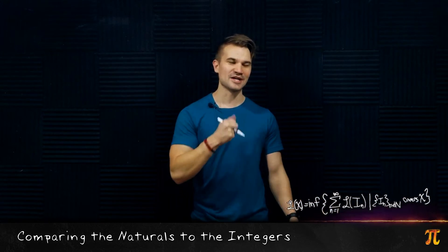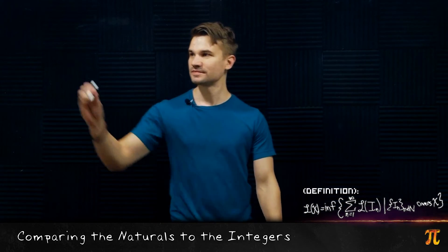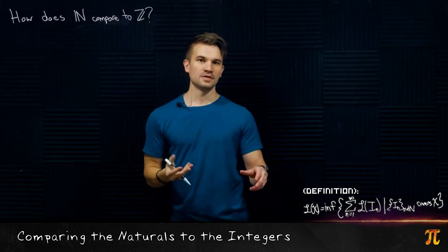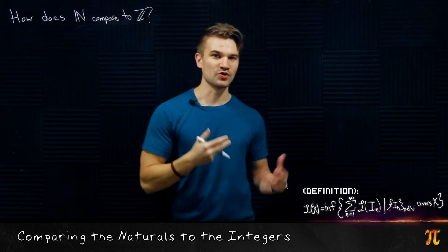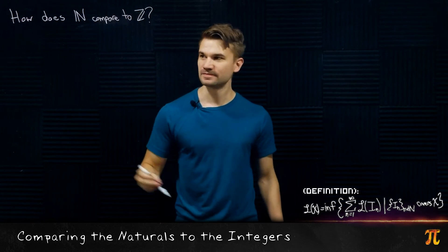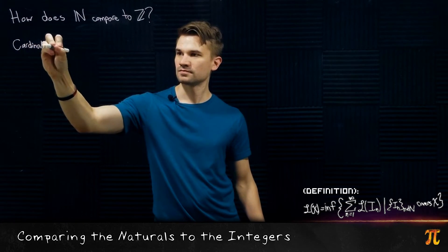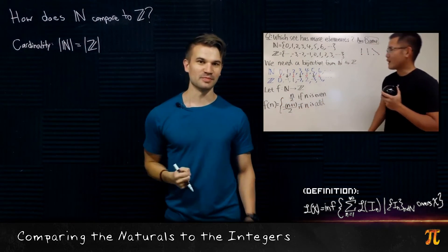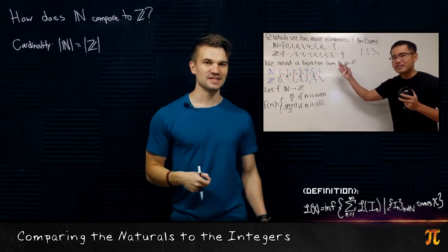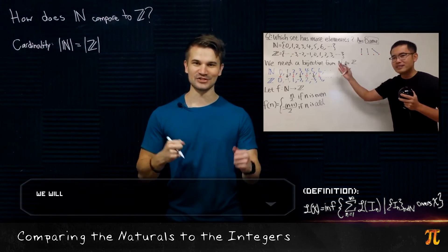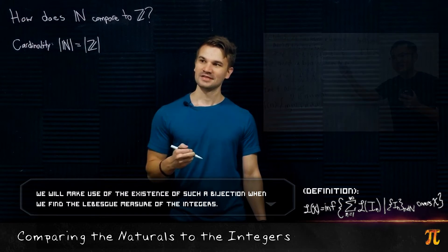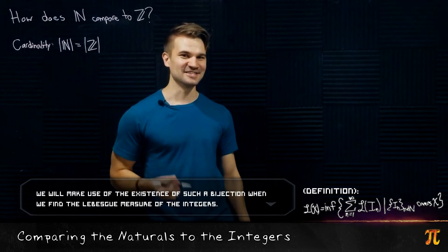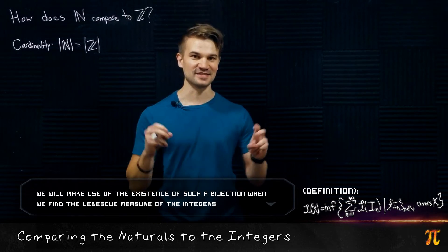Alright, first let's see how the naturals compare to the integers. Cardinality-wise, we know that they are the same — BlackPenRedPen showed us that we can put a bijection from N to Z or Z to N, and that shows they have the same cardinality. Now what about set containment? Well this is an easy one: Z contains N, so set-containment-wise Z is the bigger set.